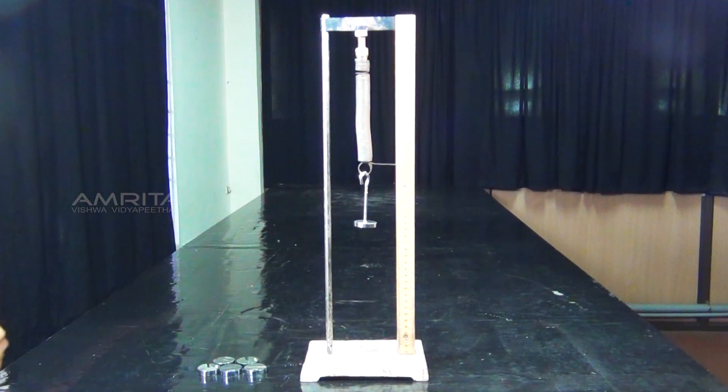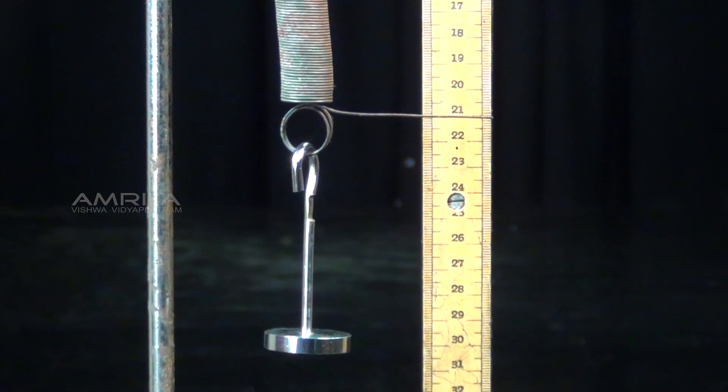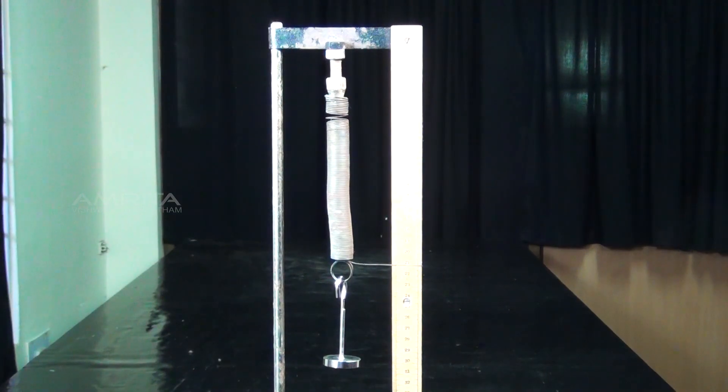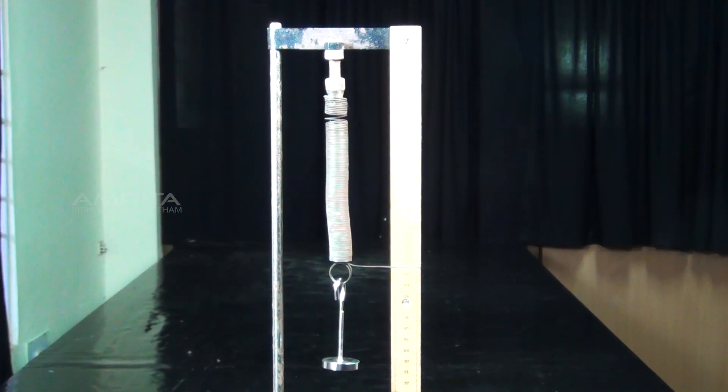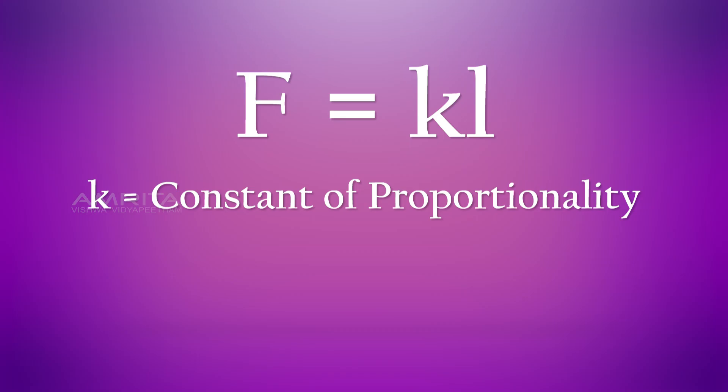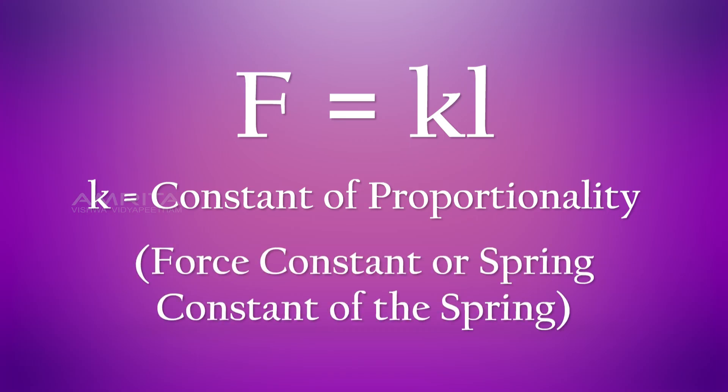When load F is suspended from the lower free end of the spring hanging from a rigid support, it increases the spring's length by amount L. Then, according to Hooke's law, F is proportional to L or F is equal to KL, where K is the constant of proportionality called the force constant or the spring constant of the spring.